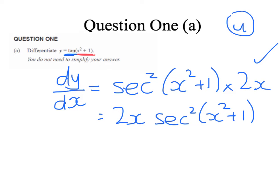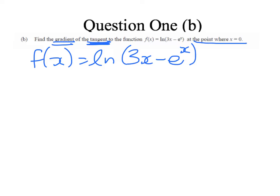On to 1b. Find the gradient of the tangent to the function f(x) is equal to the natural log of 3x minus e to the power of x. So again, it's a chain rule problem, but we're finding the gradient. And we've got to be careful to check if it's the tangent or the normal. It's a tangent, and we're going to evaluate that at the point where x equals 0.